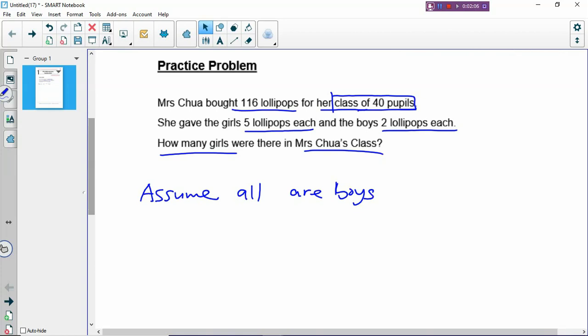Nothing wrong with assuming they are girls, but if you do that, then there is one more step. It will become very dangerous if you assume all are girls because of that last step. If you forget to do the last step, students don't get the full marks. The safer way is to assume the opposite.